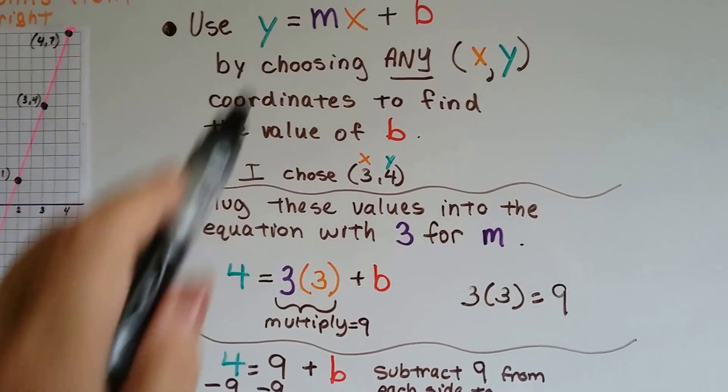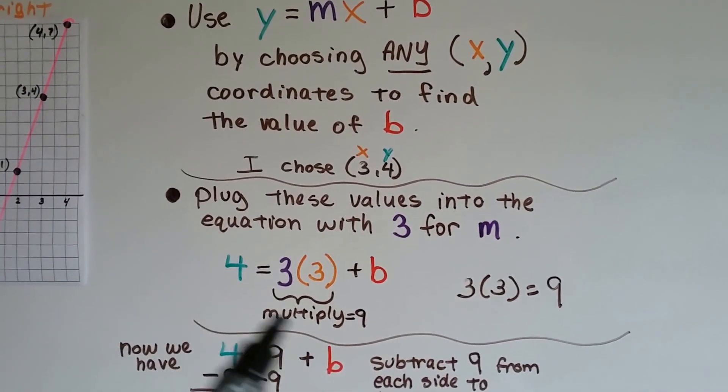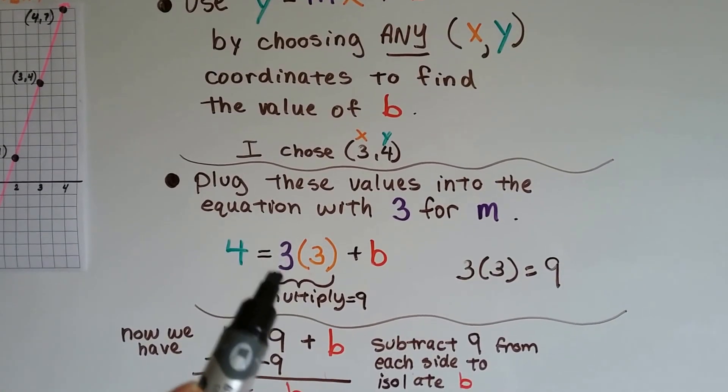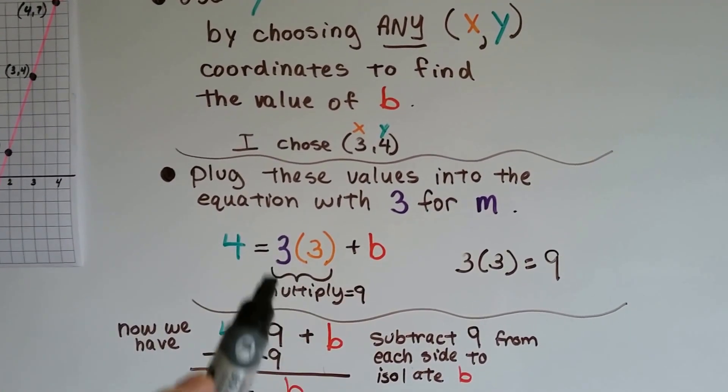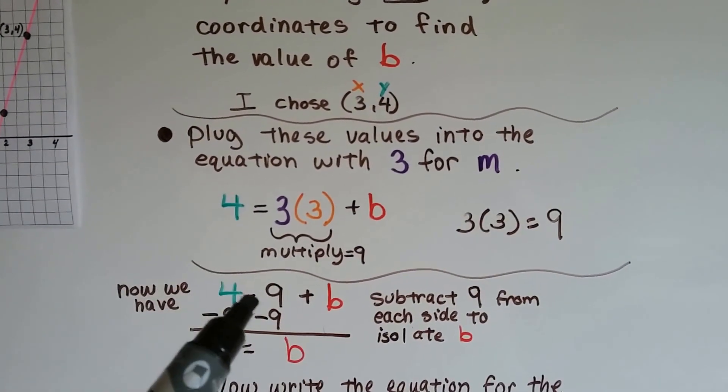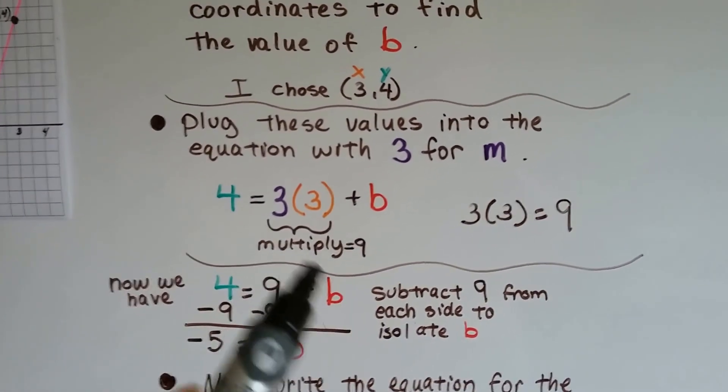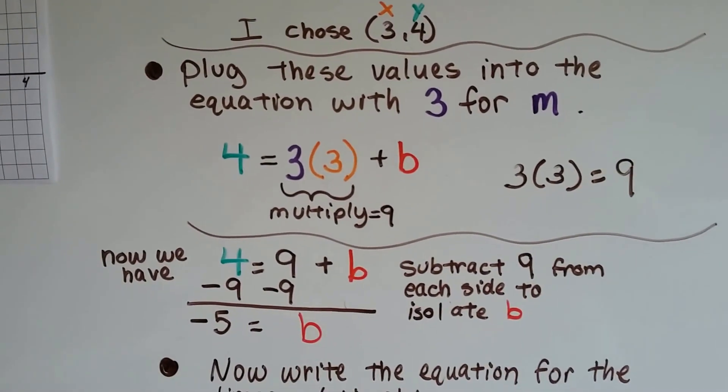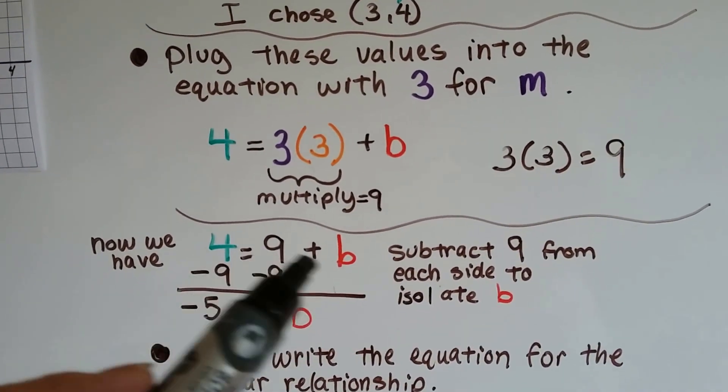You like my nice color coordinating. It helps, doesn't it? So we're going to plug these values into the equation with the 3 for the slope. And we're going to multiply this. 3 times 3 is 9. So now our equation is 4 equals 9 plus b. Now we're going to be able to find this b by doing that. That's the whole goal.